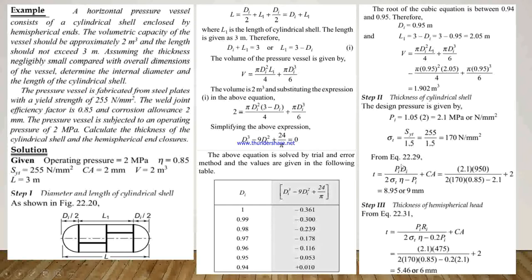From equation 22.29, we calculate the thickness using T = P·Di / (2·σT·η − P) + Ca. Putting in all the values, we get the thickness as 8.95, taken as 9 mm. In step 3, we calculate the thickness of the hemispherical head by using the formula for hemispherical head thickness and get a value of 5.46, taken as 6 mm. Using all these formulas and considering the shape of the head or enclosure, we can calculate all the required values.